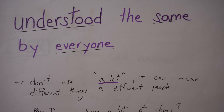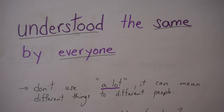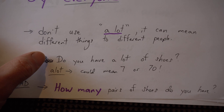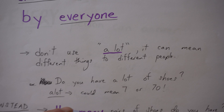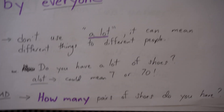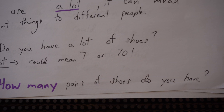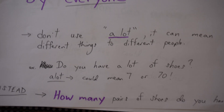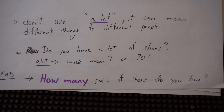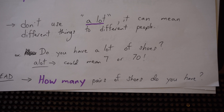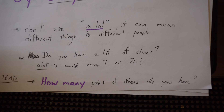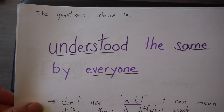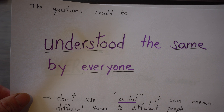'A lot' can mean different things to different people. For example, 'Do you have a lot of shoes?' A lot could mean 7 to some people, or 70 to others. So don't use that word. Instead, say 'How many pairs of shoes do you have?' Be specific — make sure everyone can understand the question the same way.